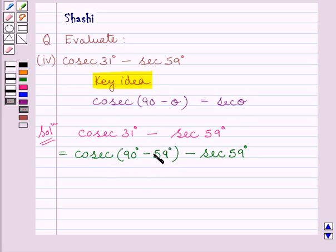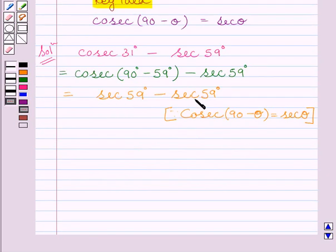So we can write this as sec 59° minus sec 59°, which equals 0.